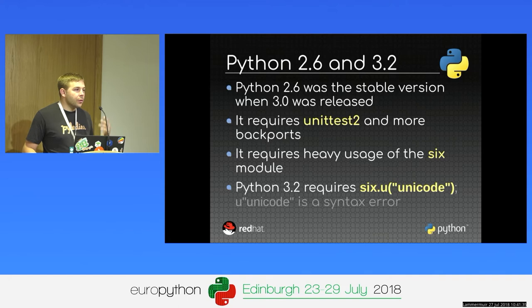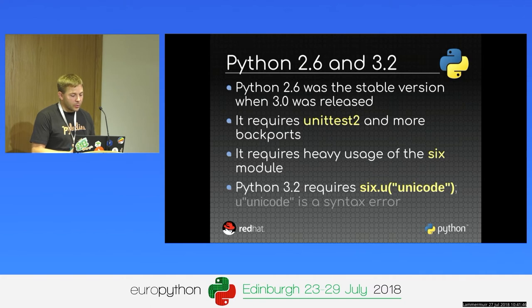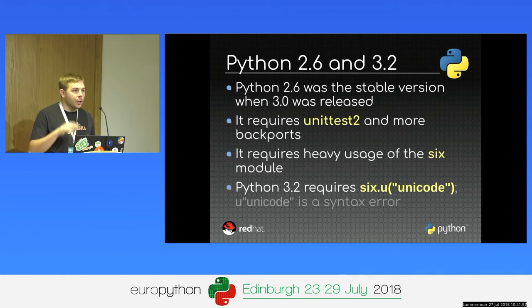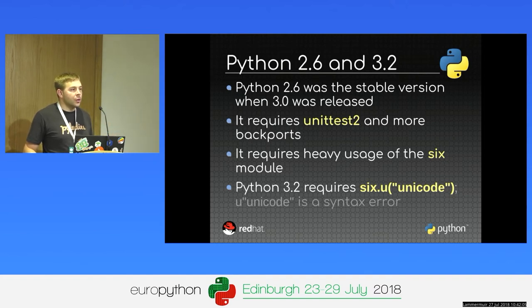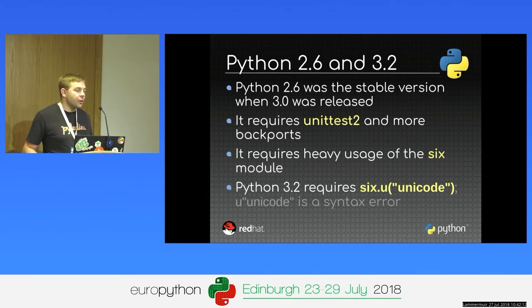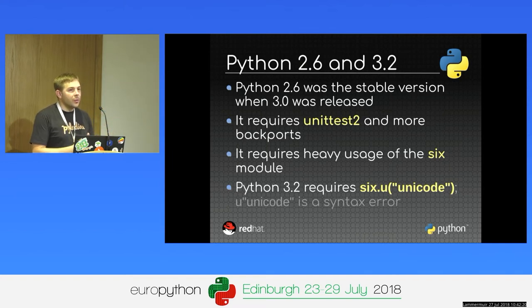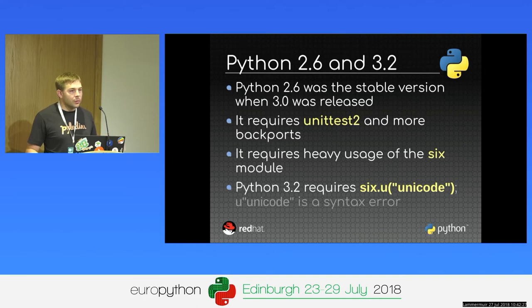When Python 3 was released, the stable version of Python 2 was 2.6. With Python 2.6 you have to make many changes to make your code compatible with Python 3. For example, for all Unicode strings, we added the u prefix. But if you do that you get a syntax error in Python 3. So to have a single codebase, you have to remove the prefix and call a function from the six module — writing six.u('your string') for every string — which was very annoying.